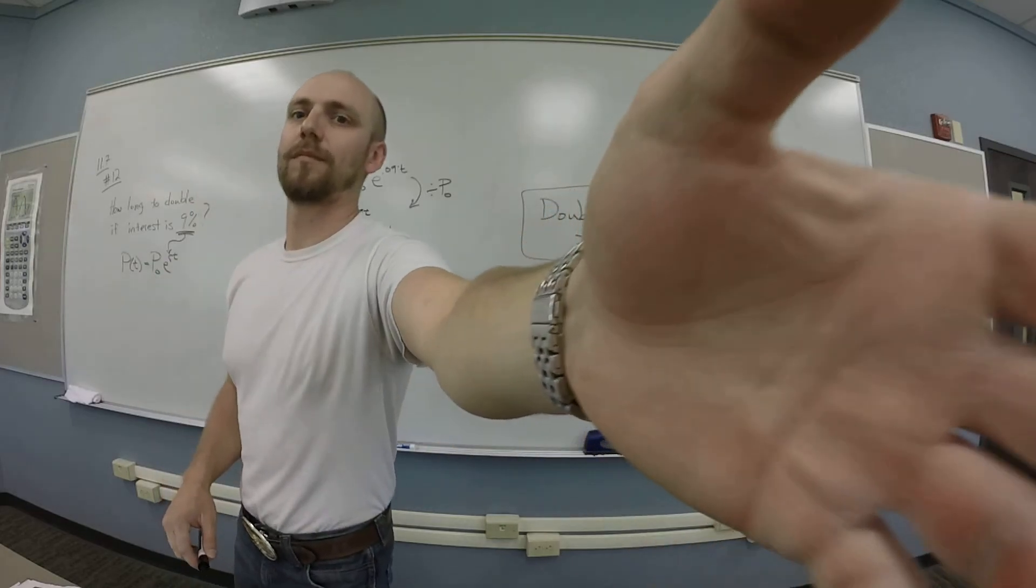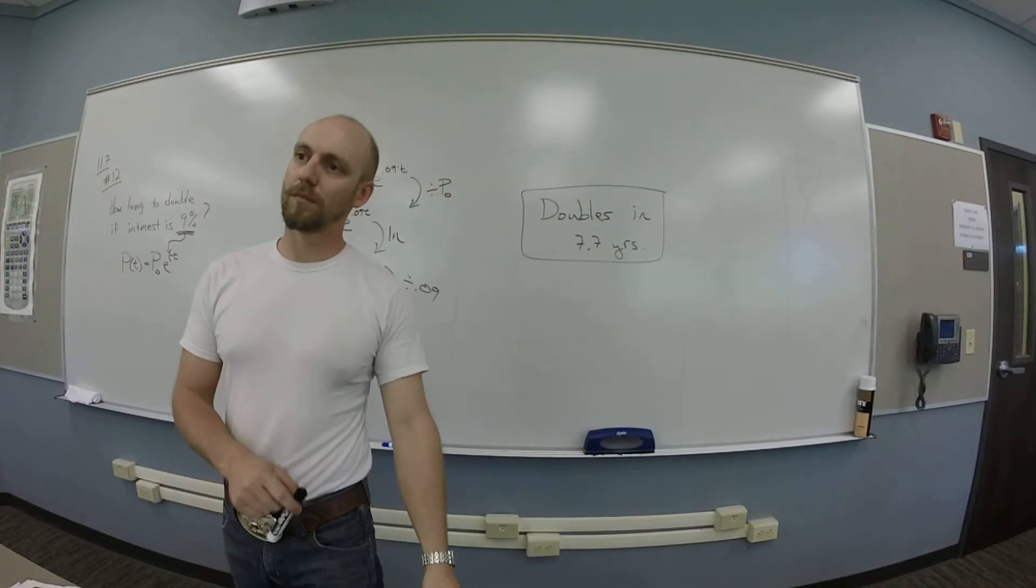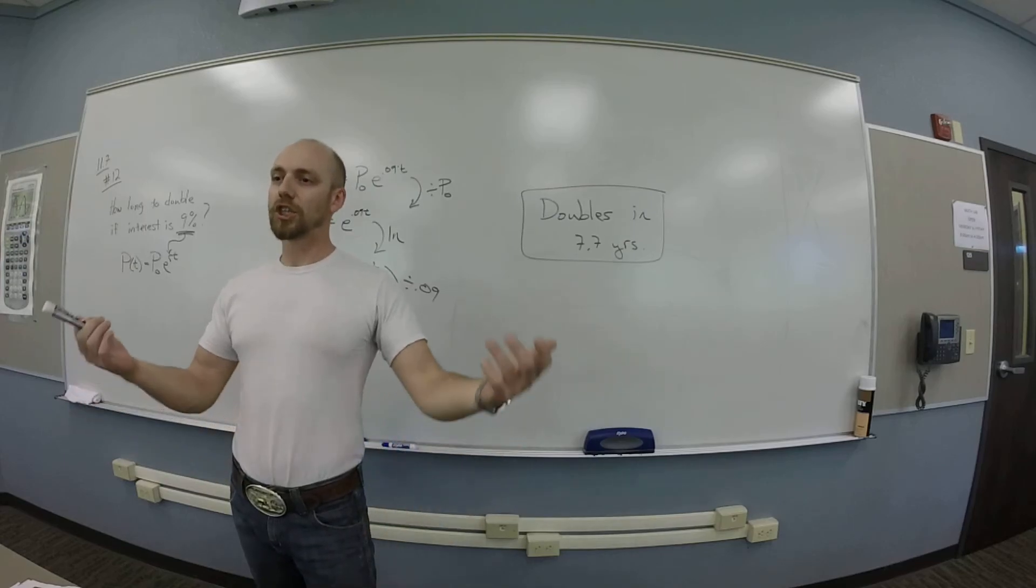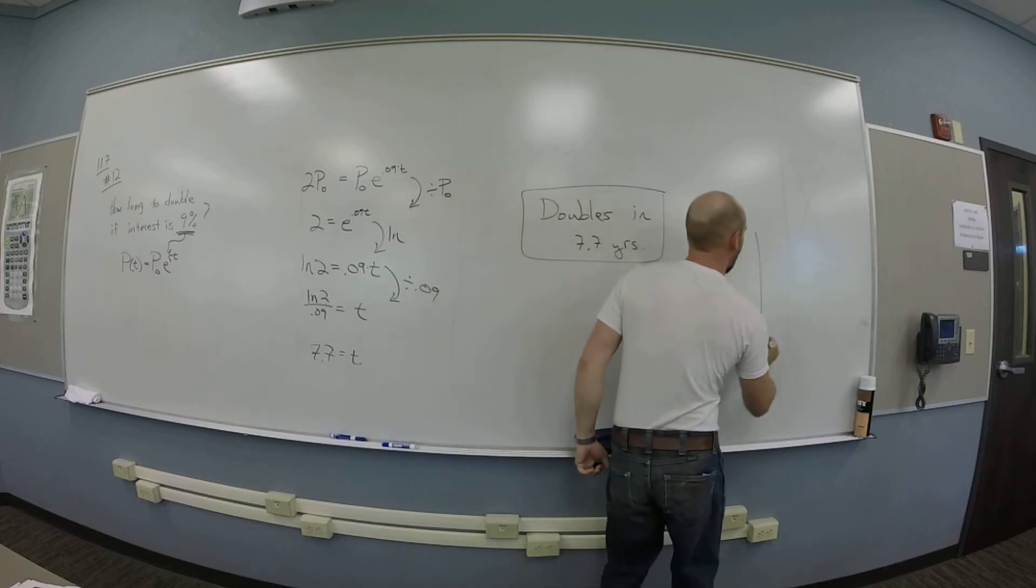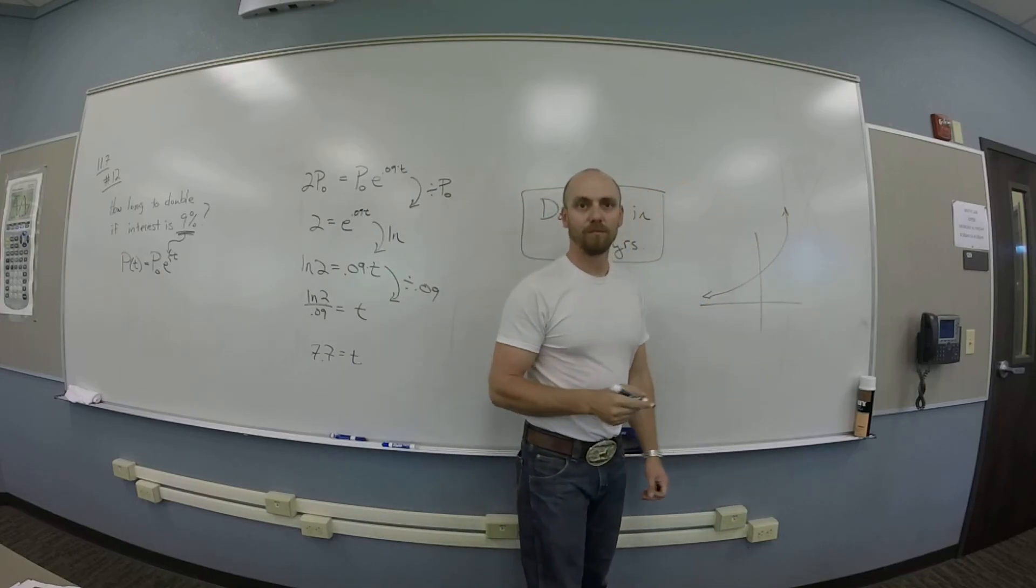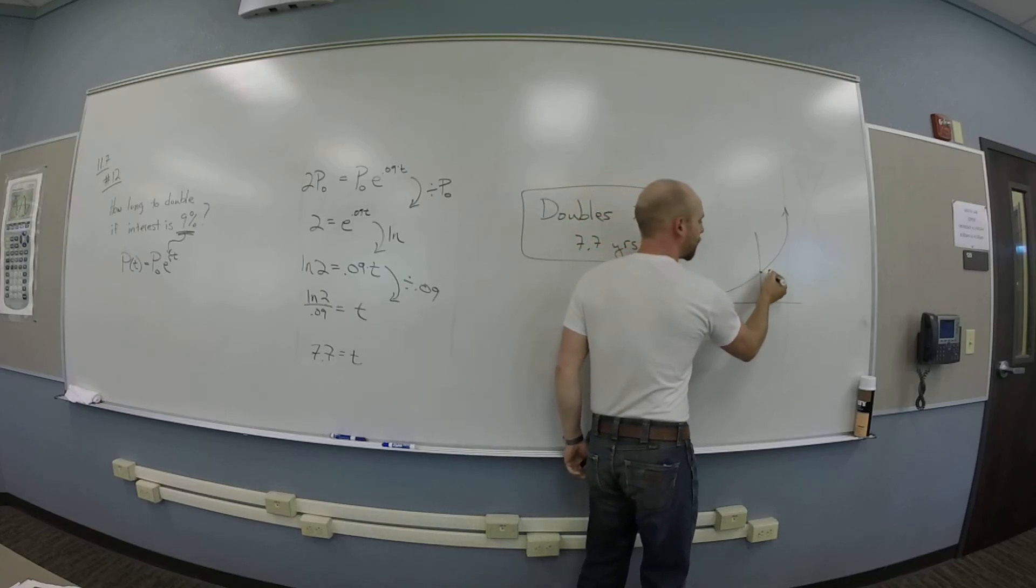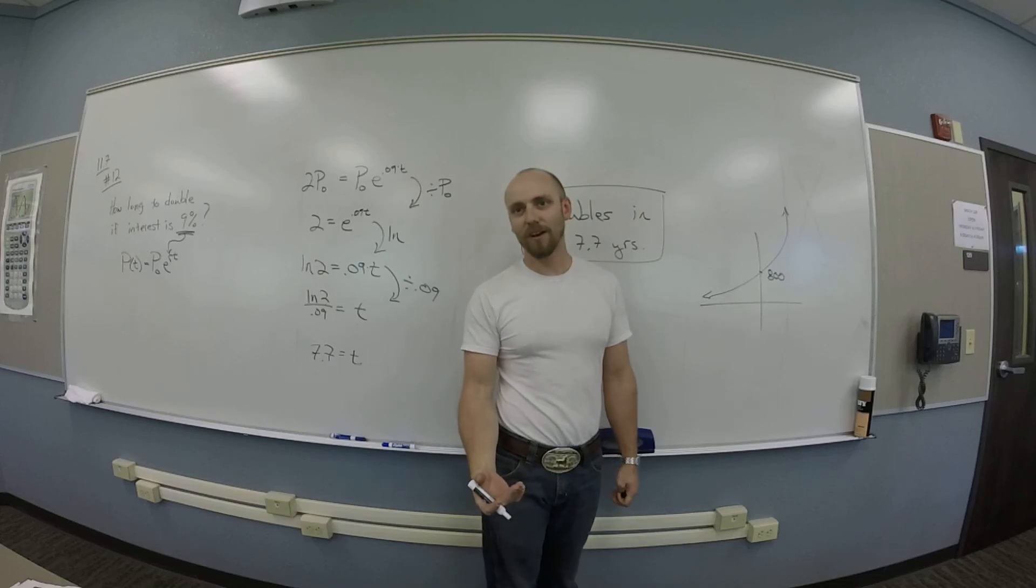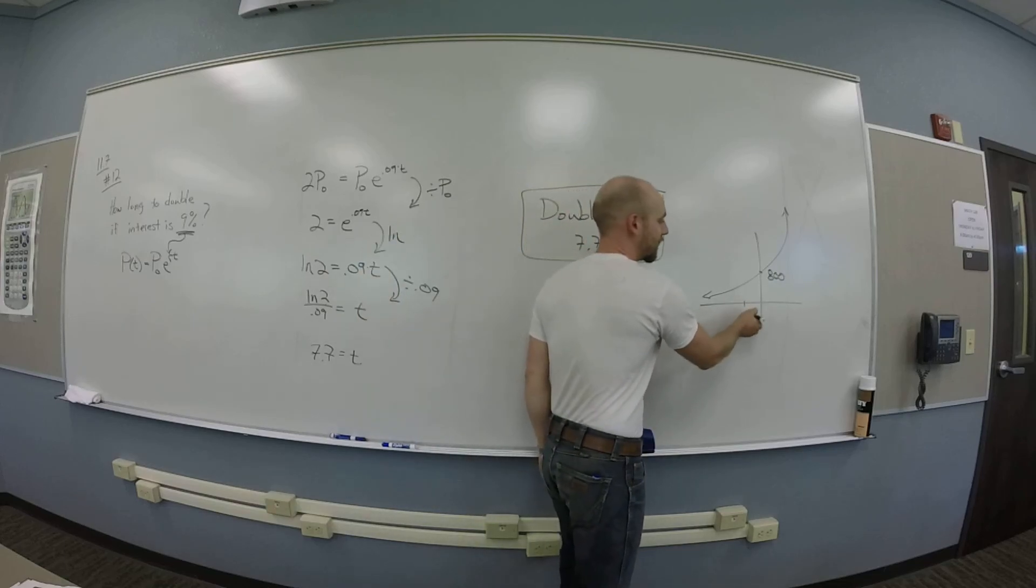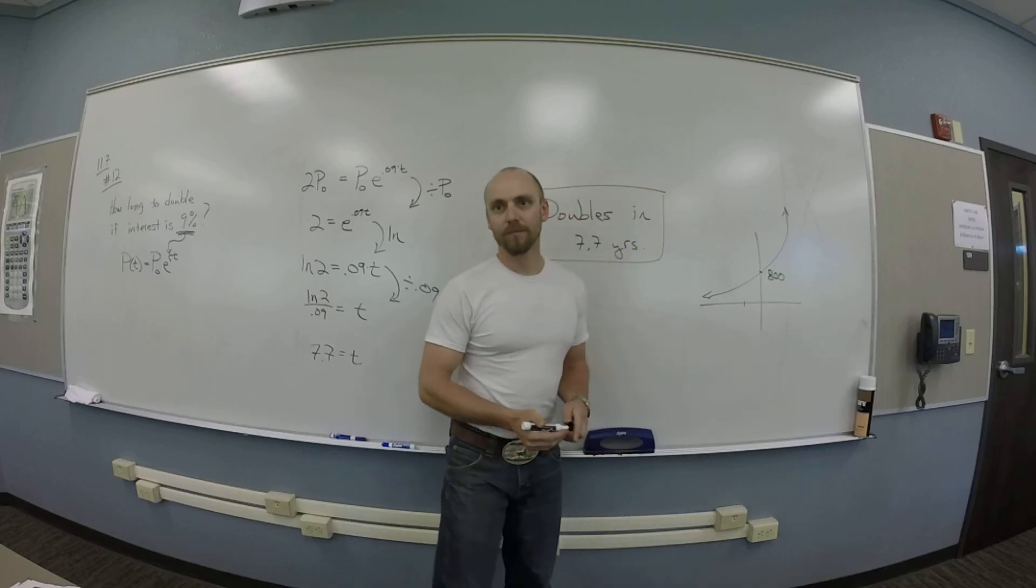So you're always going to use P naught, you're not going to ever use like—is that just a label? Yeah, it's just a label for the starting amount. If you have a population that does something like this, right? If your starting population is 800 and you're asking when did it hit 600, the same thing works, it's just that you're going to get a t is negative. Okay. Thank you very much.